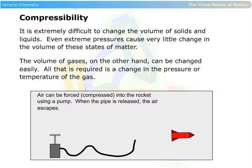Air can be forced into the rocket using a pump. When the pipe is released, the air escapes.